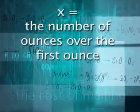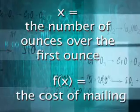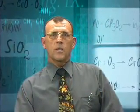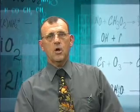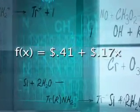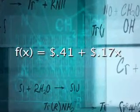Let x equal the number of ounces over the first ounce and let f of x equal the cost of mailing. You can write a function that relates the weight of an item to the cost of mailing the item. f of x equals 41 cents plus 17 cents x.